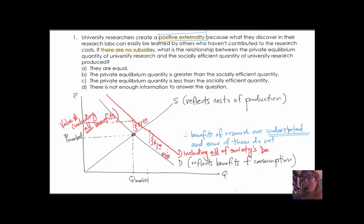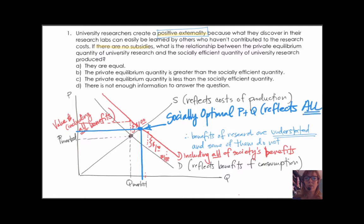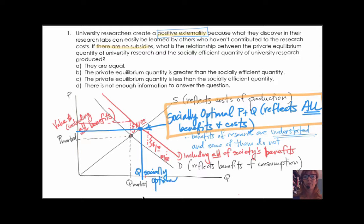So now that we know this, it's going to be easier to answer the question. We can see that socially optimal outcome, the correct or efficient outcome, is where the red demand curve hits the supply curve, which is at a higher quantity than the private free market's equilibrium outcome. So we call that the socially optimal quantity of production. Socially optimal price and quantity. And that will be the price and quantity that reflect all the benefits and costs. In this case, it's benefits that are a problem.